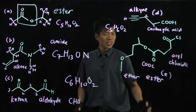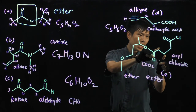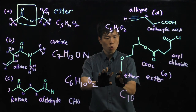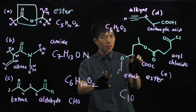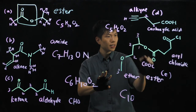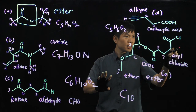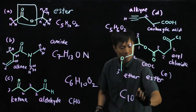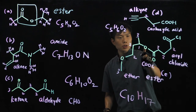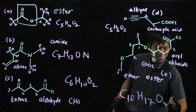Coming back to the formula, let's count: 10 carbons. How many hydrogens? Counting up: 17 — H17. Oxygen: 1, 2, 3, 4 — four oxygens. No nitrogen, but we have a chlorine. So the molecular formula for molecule E is C10H17O4Cl.